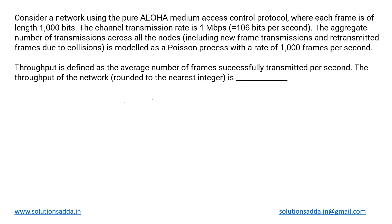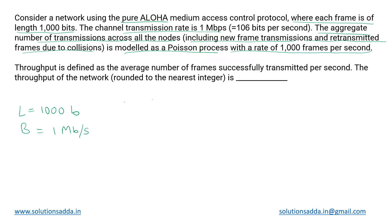This is a networking question based on the pure ALOHA access control mechanism. We are using pure ALOHA for transmission where each frame is of length 1000 bits. The channel transmission rate, or bandwidth, is given as 1 Mbps — that is one megabits per second, not bytes. The aggregate number of transmissions across all nodes, including new frame transmissions and retransmitted frames due to collisions, is modeled as a Poisson process with a rate of 1000 frames per second.